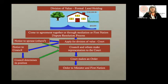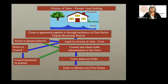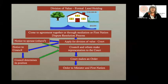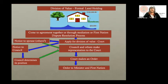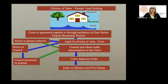Looking at the division graphic: a formal land holding such as a certificate of possession with a $100,000 house and land valued at $20,000. Always remember that the legislation recognizes the right of a couple to resolve these matters amongst themselves without courts — everything we're discussing about the provisional federal rules is the worst-case scenario where you can't resolve it as a family. If they can come to an agreement, through mediation or a First Nation dispute resolution process, that would be ideal.